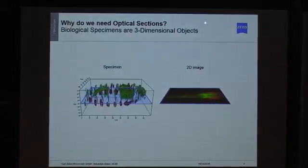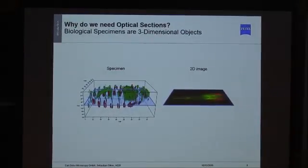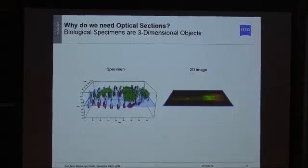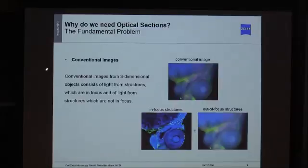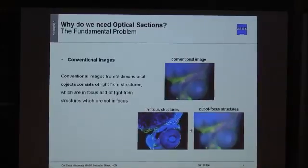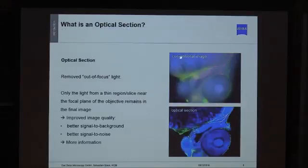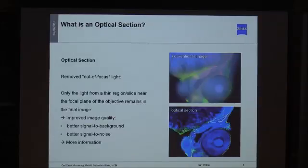The first question I'd like to address is: why do we actually need object sections? The basic answer is because biological specimens are three-dimensional objects. Conventional images from 3D objects contain not only the in-focus structures you want to see, but also out-of-focus structures from above and below the focal plane — and that is something you want to get rid of. We want optical sectioning images with improved image quality, meaning better signal-to-background and signal-to-noise ratio, providing much more information about cellular structures.